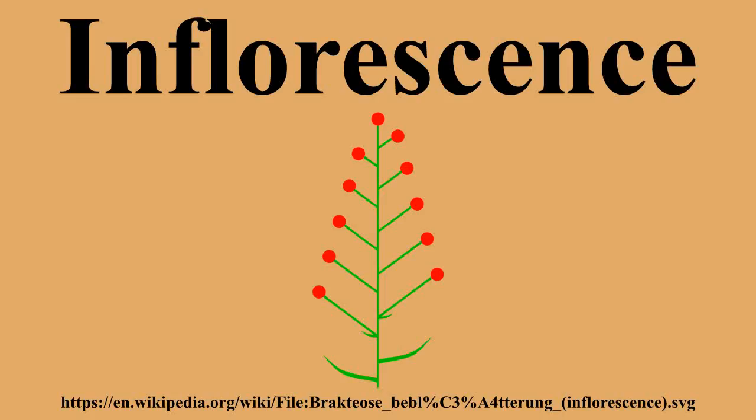Thyrses are often confusingly called panicles. Other combinations are, of course, possible — for example, heads or umbels may be arranged in a corymb or a panicle. The family Asteraceae is characterized by a highly specialized head technically called a capitulum. The family Poaceae has a peculiar inflorescence of small spikes organized in panicles or spikes, usually simply referred to as spike and panicle. The genus Ficus has an inflorescence called syconium, and the genus Euphorbia has a cyathium, usually organized in umbels.